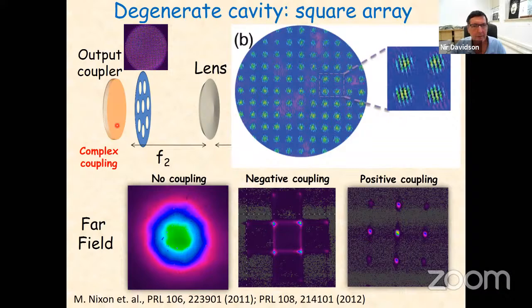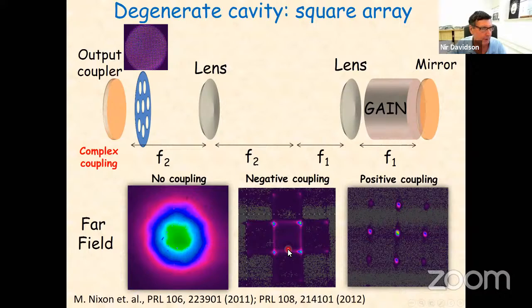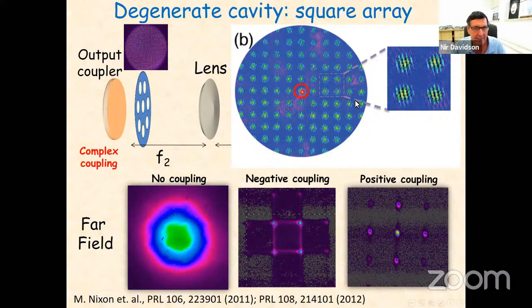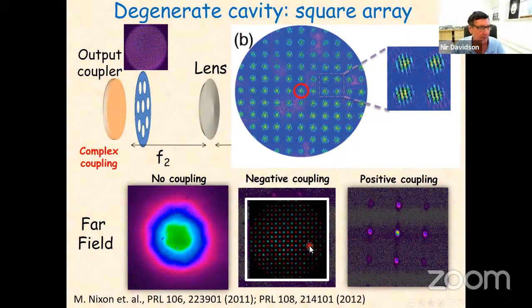We infer the phase distribution from the far-field picture. For more complicated phases, we measure the phase directly by taking one laser, expanding it, and interfering it with all the lasers in the array. We see interference fringes; each interference pattern tells us the relative phase between two lasers, and the contrast of those fringes tells us the amount of coherence. When we analyze these interference patterns for negative coupling, we get a phase distribution showing long-range ordering in a 0, π, 0, π pattern — we can really measure the exact state of the system.